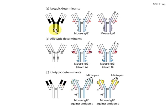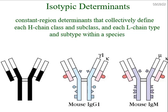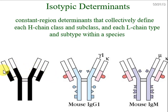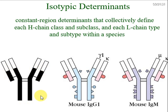Two of the antigenic determinants are present on the constant region while one type is present in the variable region. Now let us go into a detailed explanation. Isotypic determinants are present in the constant region, which is made up of the constant domain of the light chain and constant region of the heavy chain. Both light as well as heavy chain constant regions are included in the isotypic determinants, as there are different classes and subclasses.